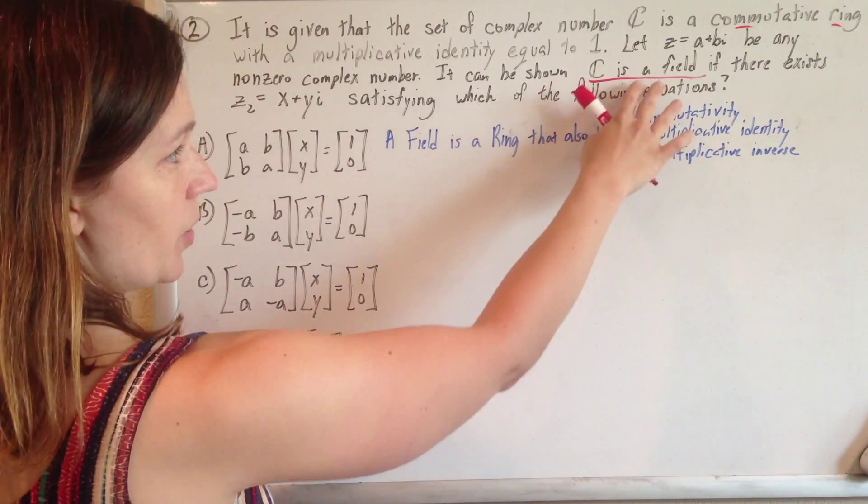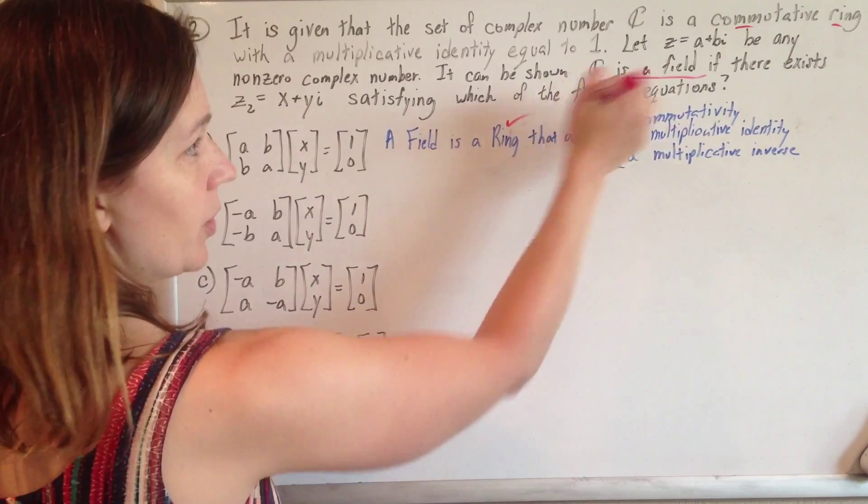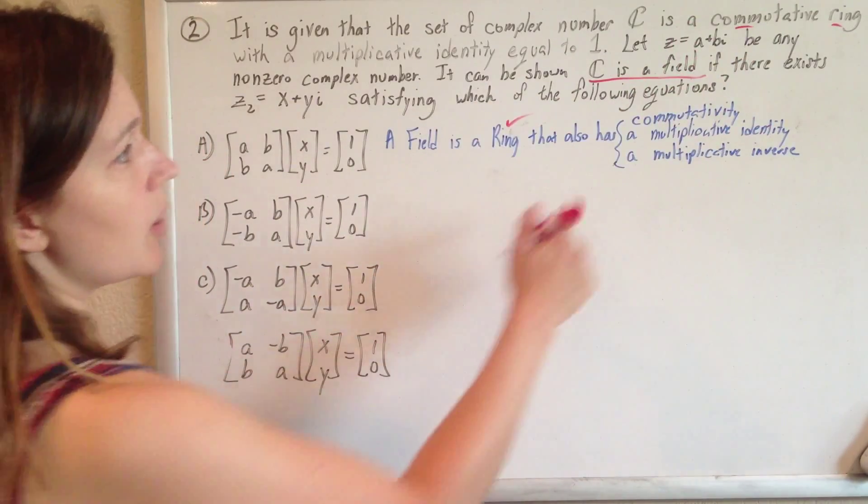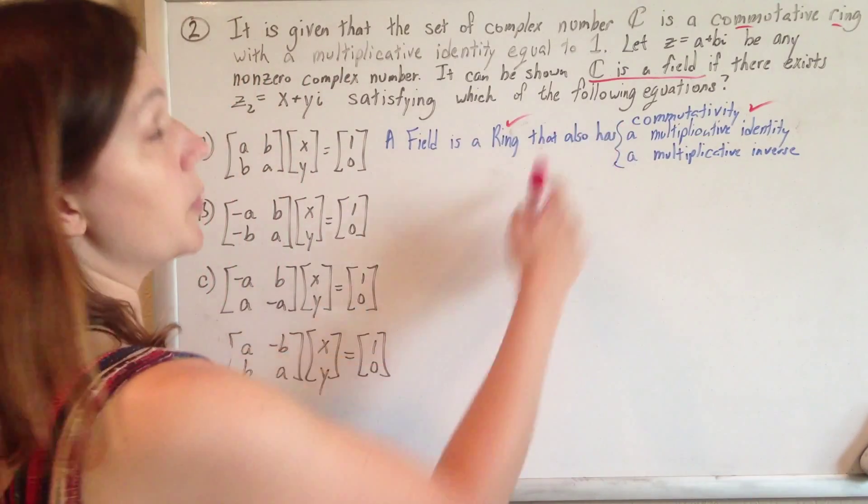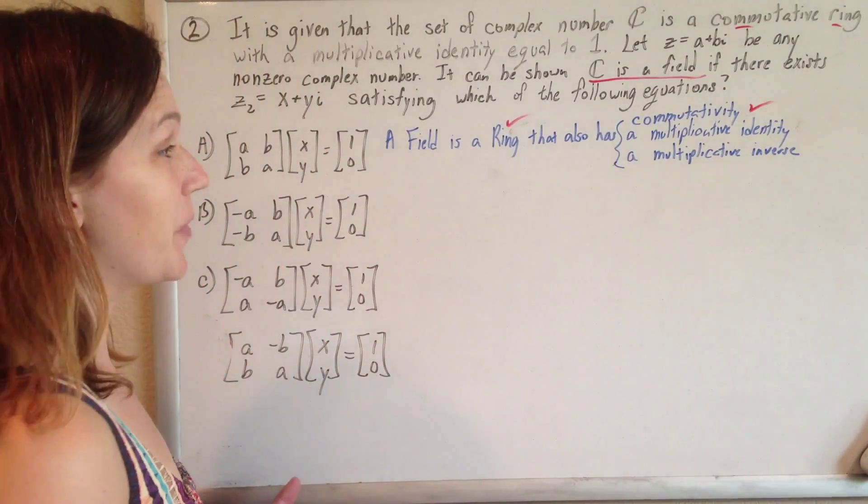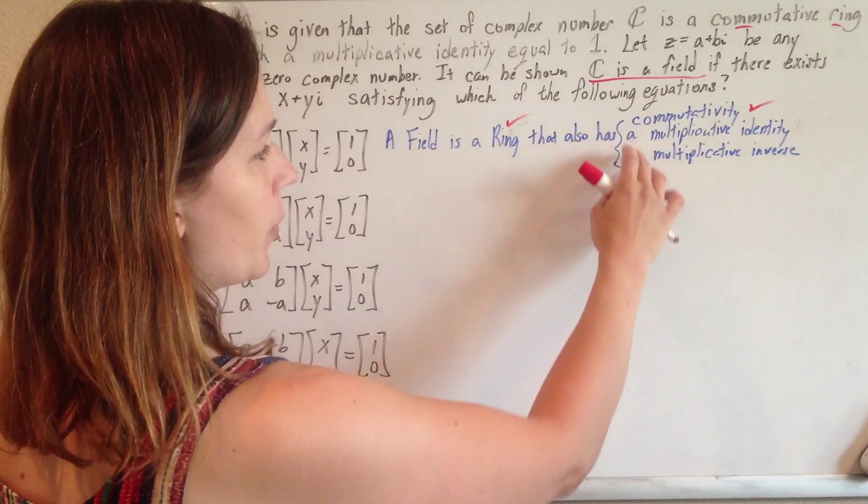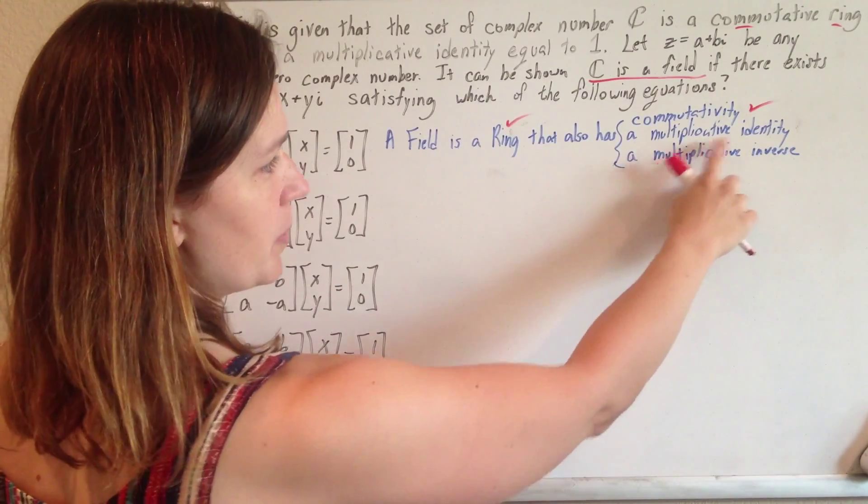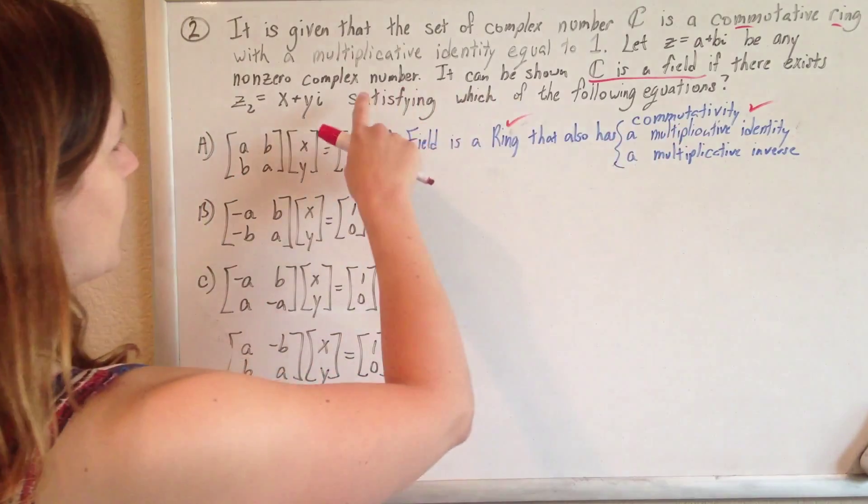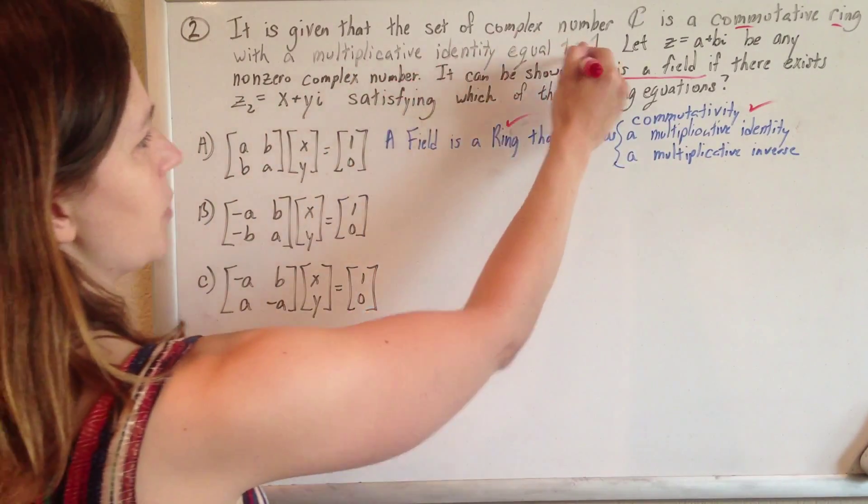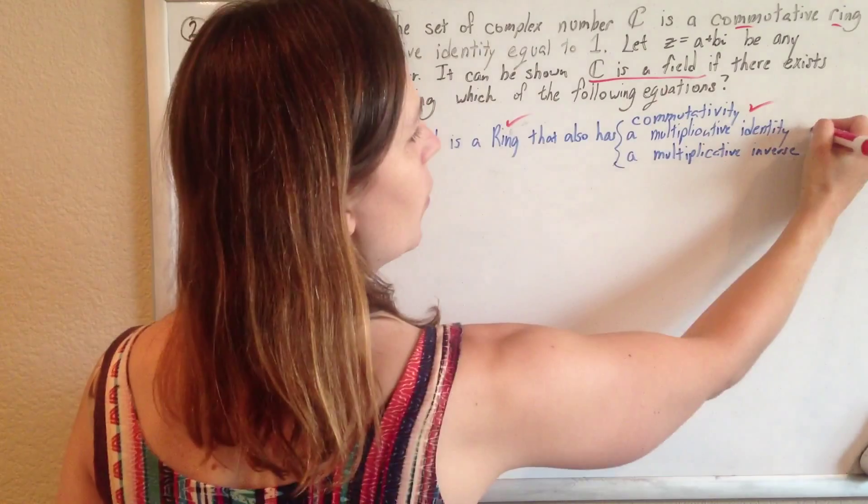So if we need to show that C is a field, we already know that it's a ring because they told us. We already know it's a commutative ring, so it satisfies commutativity. And the other requirements it needs to have is a multiplicative identity and a multiplicative inverse. Well, it tells us that it has a multiplicative identity equal to 1. So that's check.